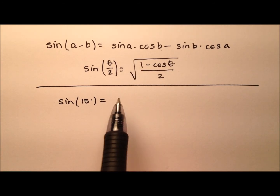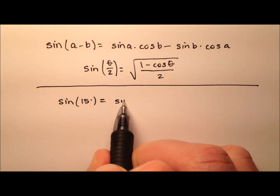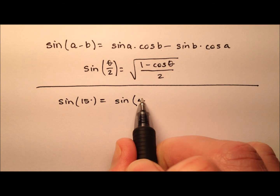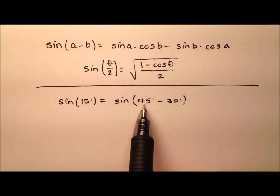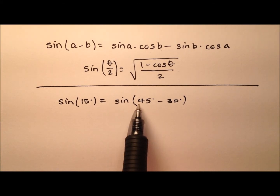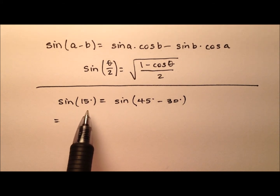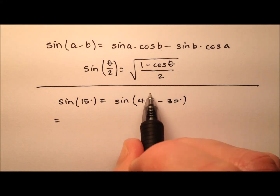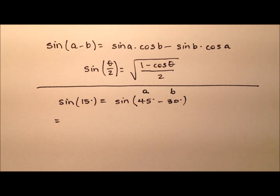So let's go ahead and do that first. The sine of 15 we can rewrite as the difference of two more common angles that we know: 45 degrees minus 30 degrees. So 45 minus 30 is our 15. By using this difference formula, we can go ahead and find the exact value for the sine of 15 degrees. So the 45 degrees will be my A, and the 30 degrees will be my B.